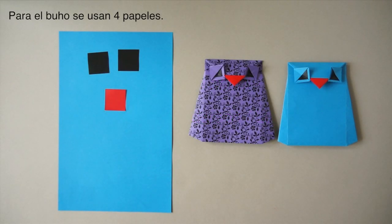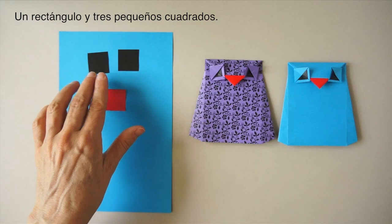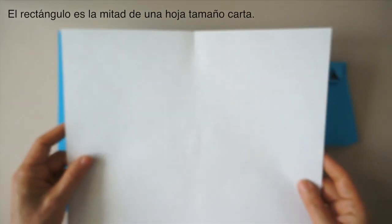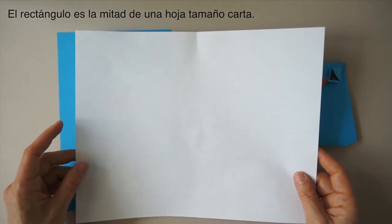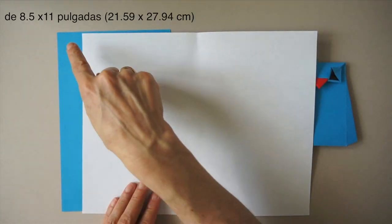To make this owl, we need 4 pieces of paper: 1 rectangle and 3 little squares. The rectangle is made by dividing in half 1 office piece of paper, 8.5 by 11.